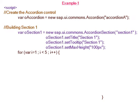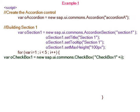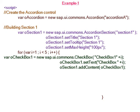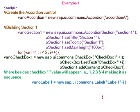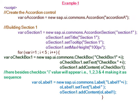A loop runs with variable i equal to one, i less than five, and i incremented. Inside the loop, we create a new checkbox with text 'Checkbox' plus the value of i, and each checkbox is added to section one. So checkboxes one, two, three, and four are added. We also create a new label with text 'Label', which is added to section one.